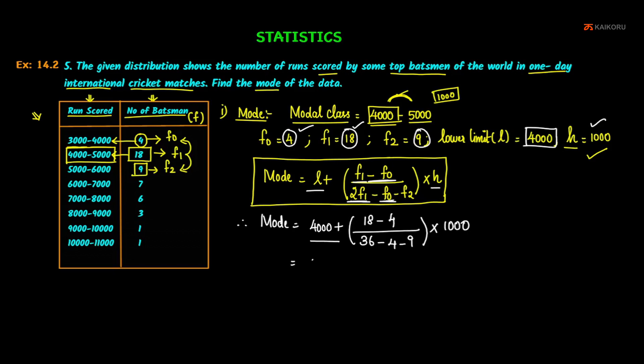So that is equal to 4000 plus 18 minus 4 is 14 divided by 4 plus 9 is 13, 36 minus 13 is 23. So 23 into 1000. That is equal to 4000 plus 14 into 1000, 14,000 divided by 23. That is equal to 4000 plus 608.695.